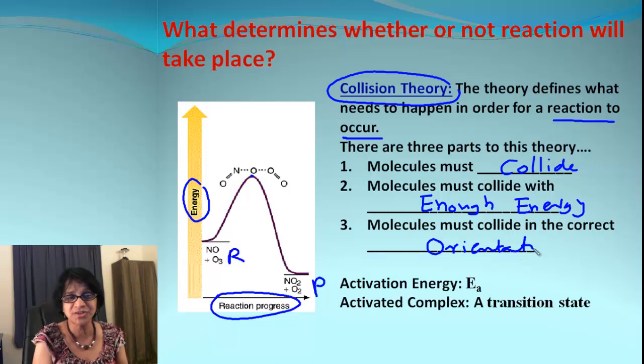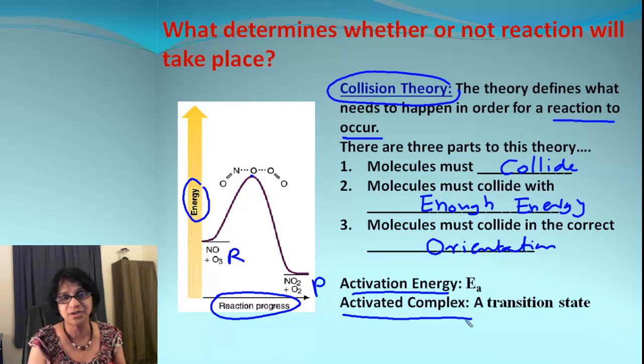Now there are two different terms: activation energy and activated complex. How do we explain that using the graph? The activated complex is a state which we call a transition state. It's a temporary state and that's what we get on the top of the mountain, a complex formed over here.